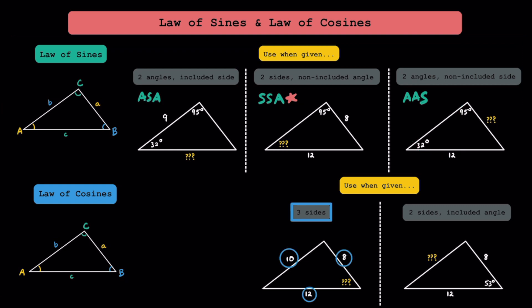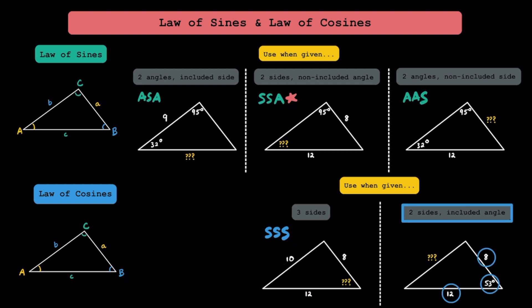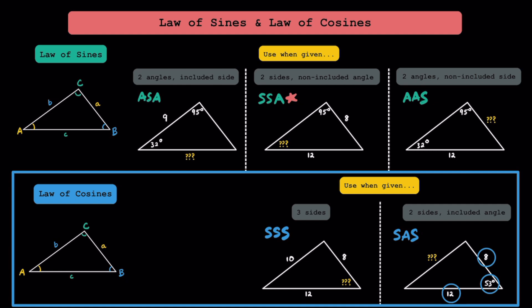As for the law of cosines, we're going to use it when we're given all three sides, or when we're given two sides and an included angle, also known as side-angle-side. When we're given these types of information, we're going to be using the law of cosines to solve these triangles.